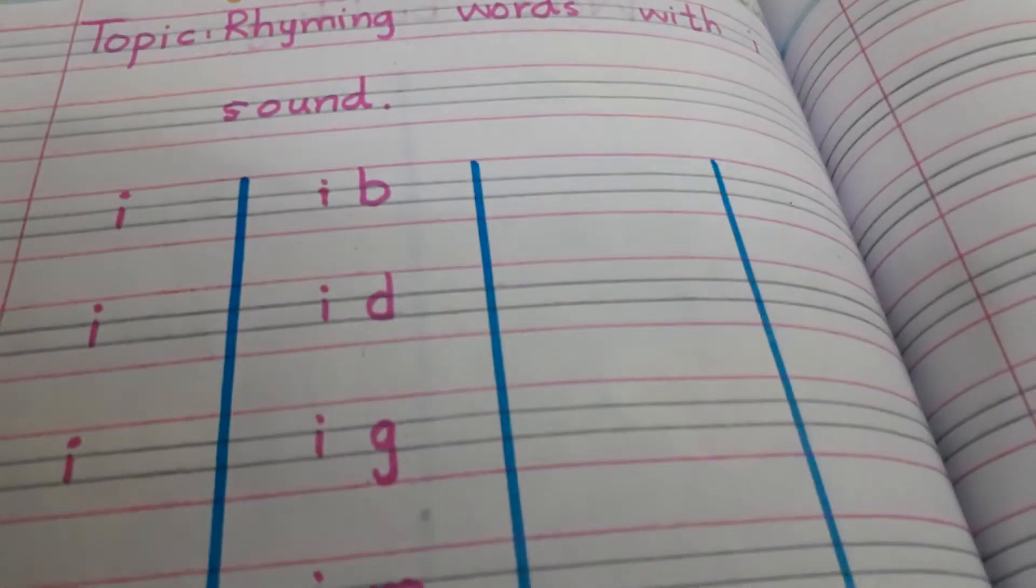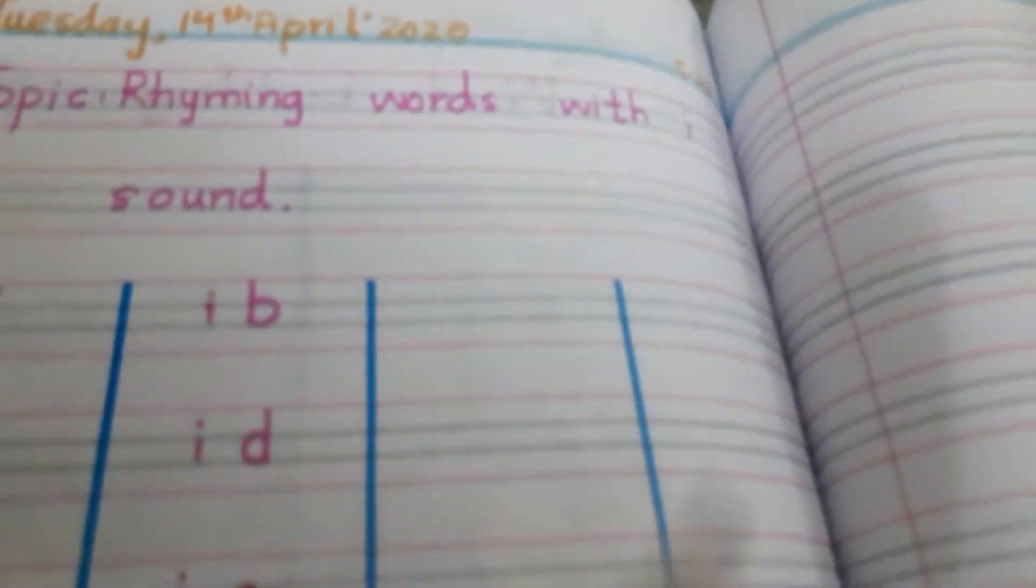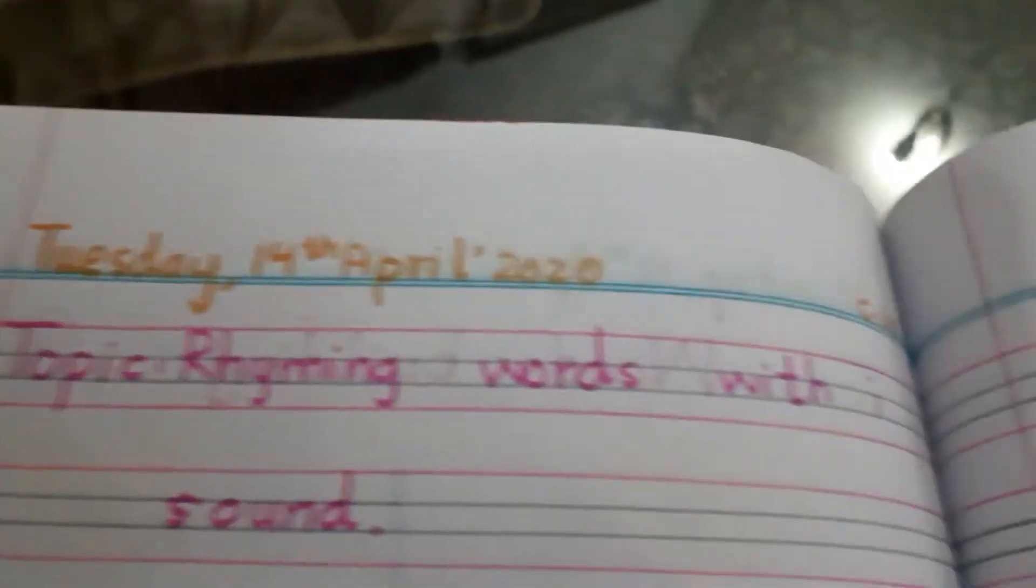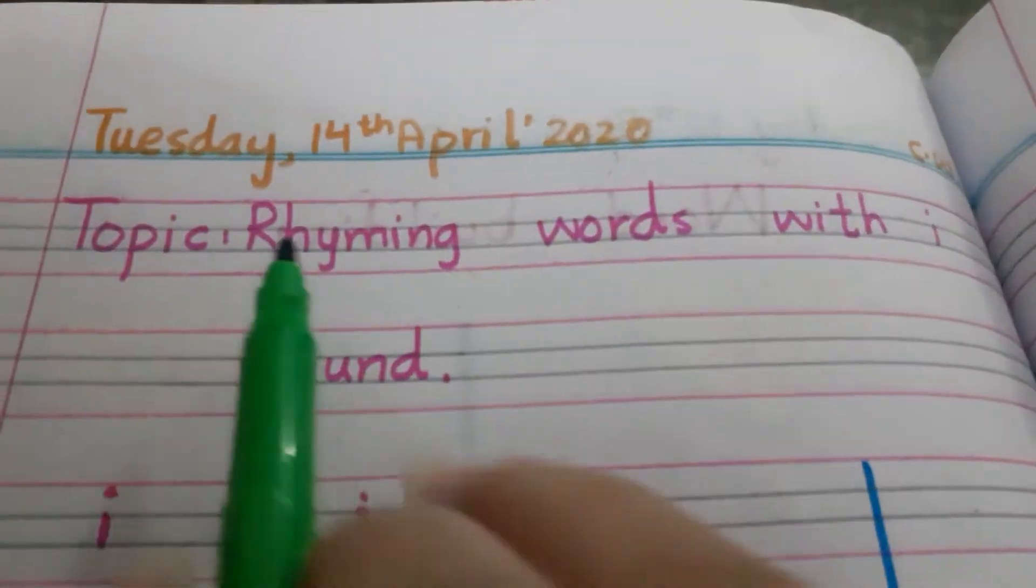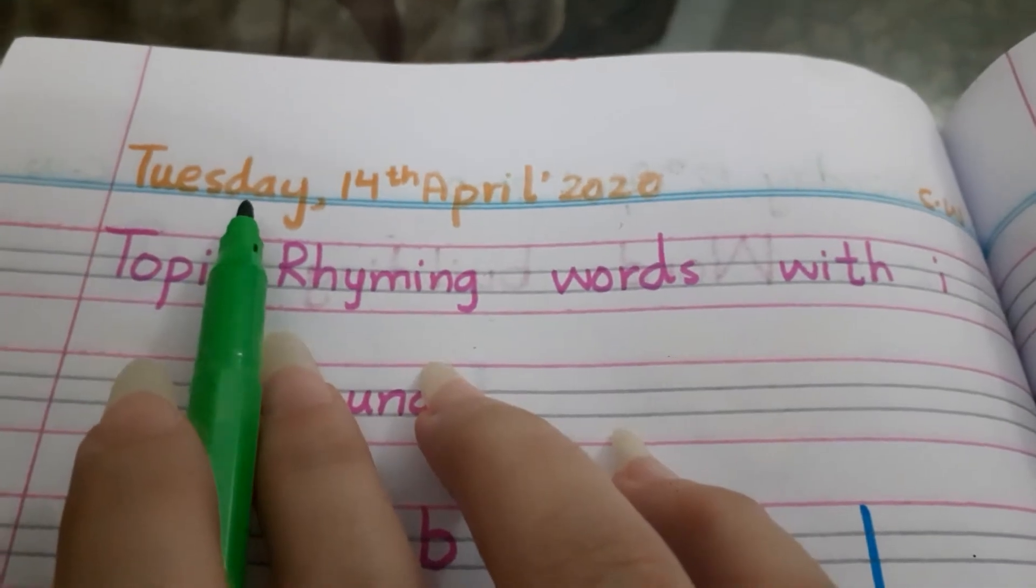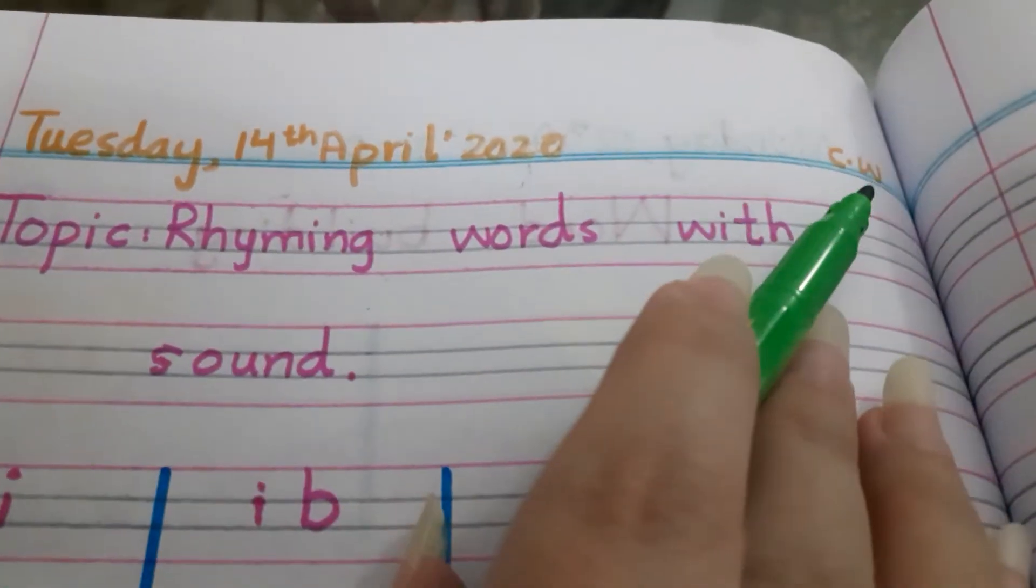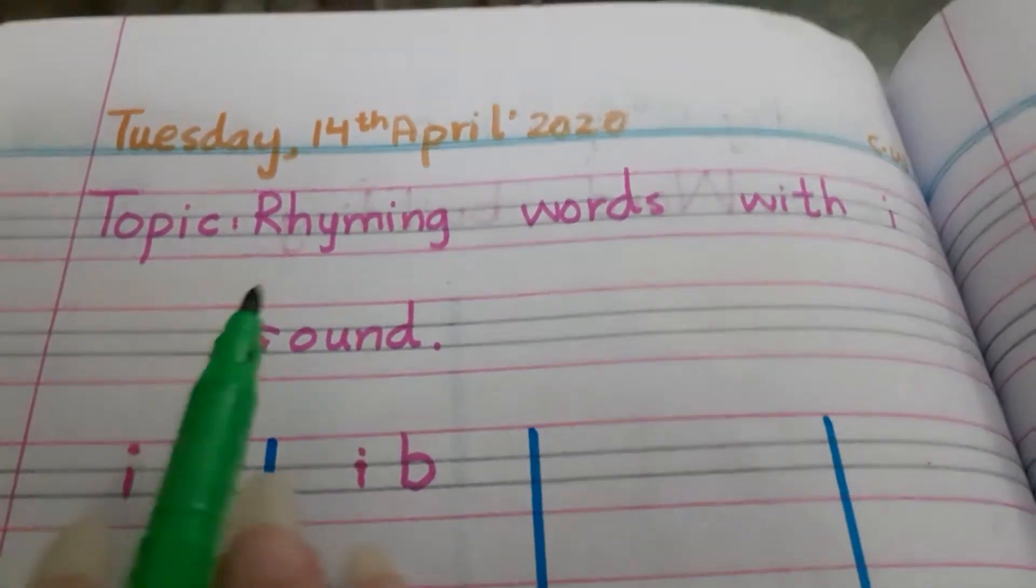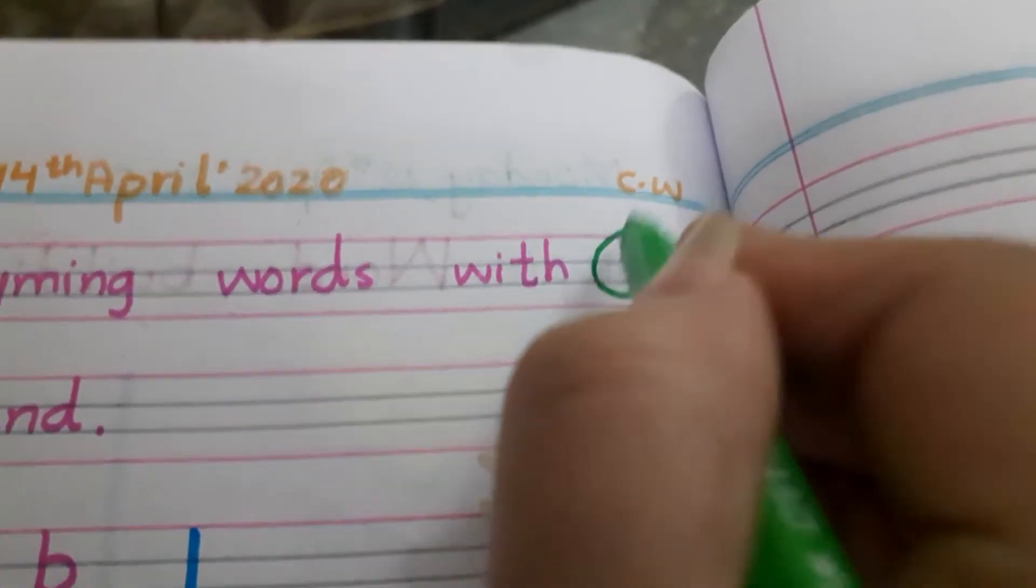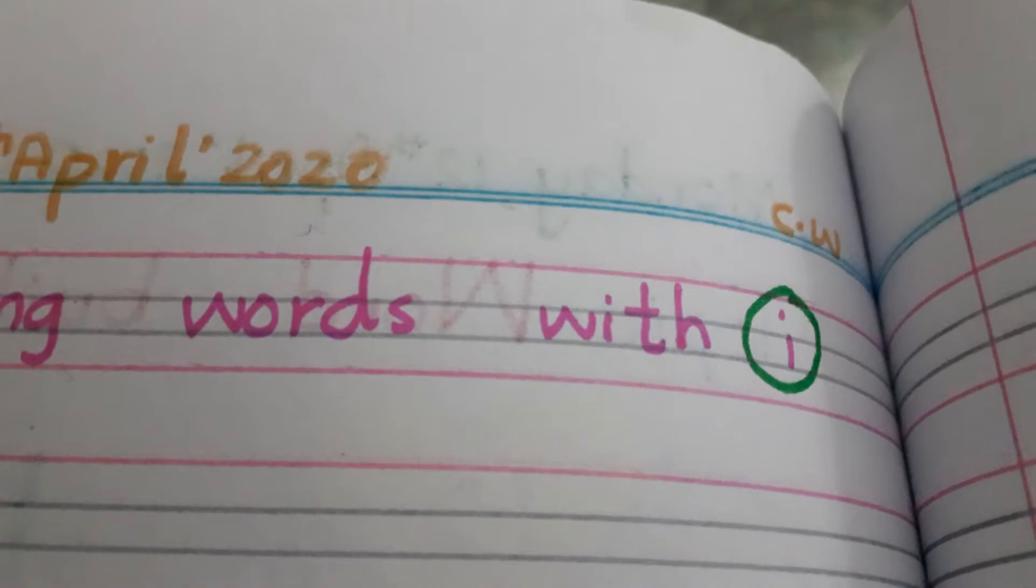Now we are going to do our copy work, so you have to make your copy in this format. First write the date, CW, and topic. What is the topic? Rhyming words with i sound. Let's circle this i sound in rhyming words with i sound.